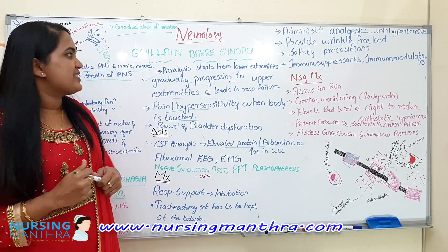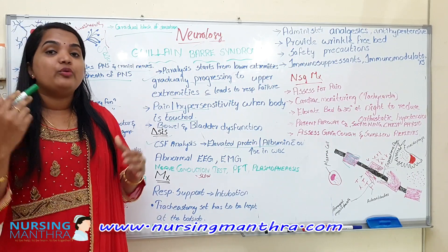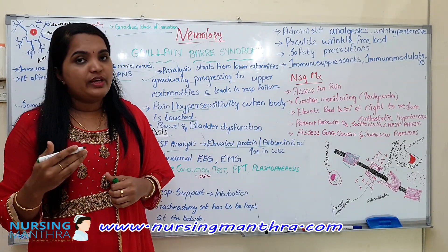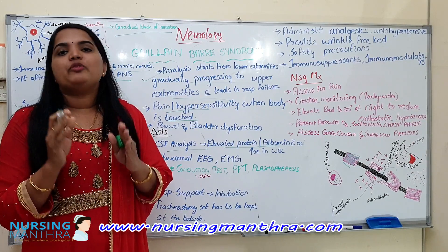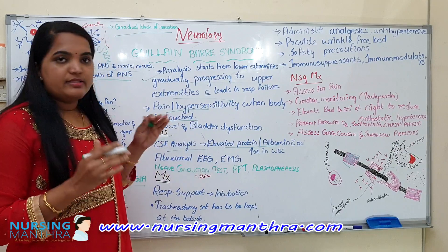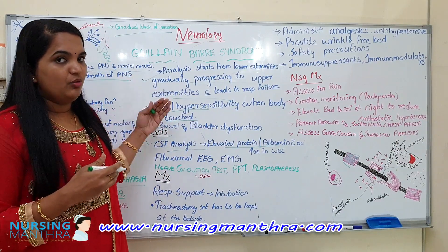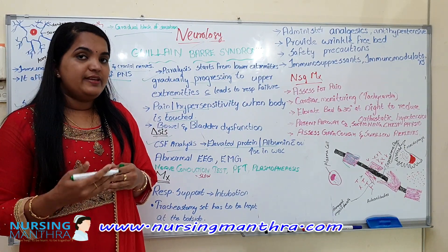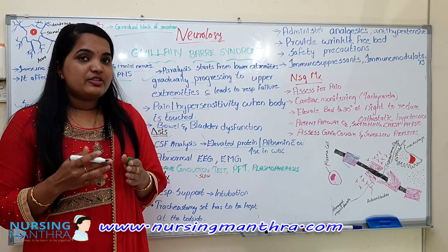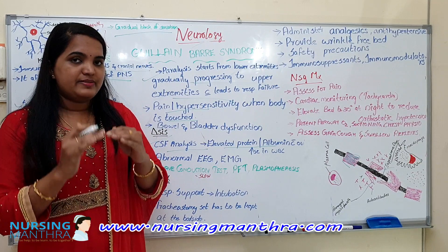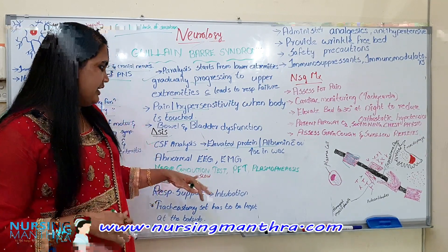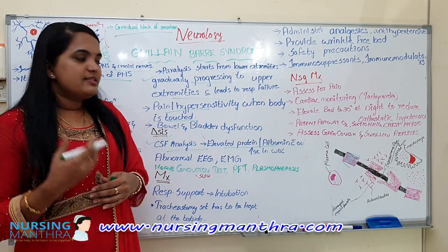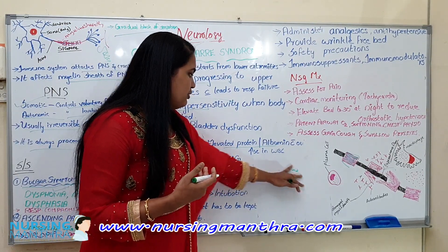For diagnostic measures of Guillain-Barré syndrome: lumbar puncture — in CSF analysis there will be elevated levels of protein and albumin, but the WBC level will be normal. That is the main diagnostic finding. We can also do electromyography and nerve conduction studies. In ECG some variations will be there. Nerve conduction will be slow. For the respiratory system, pulmonary function tests are done.